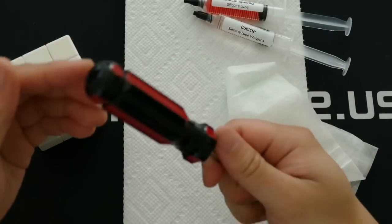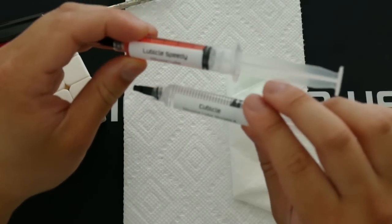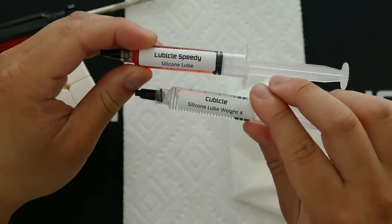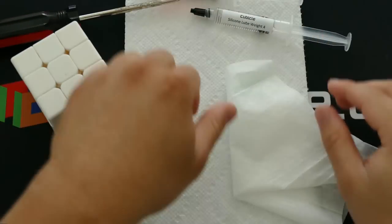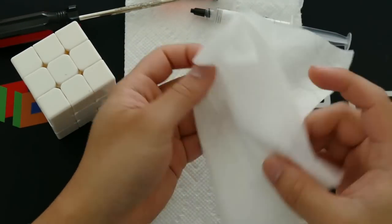To do this you need a screwdriver, a regular Phillips screwdriver. We have two sorts of lubes: this is Lubicle Speedy on top and Cubicle Weight 4 on bottom. We have a green dispensing tip and this is an optional wet towel that I use just to clean my hands if I get lube on them just in case.